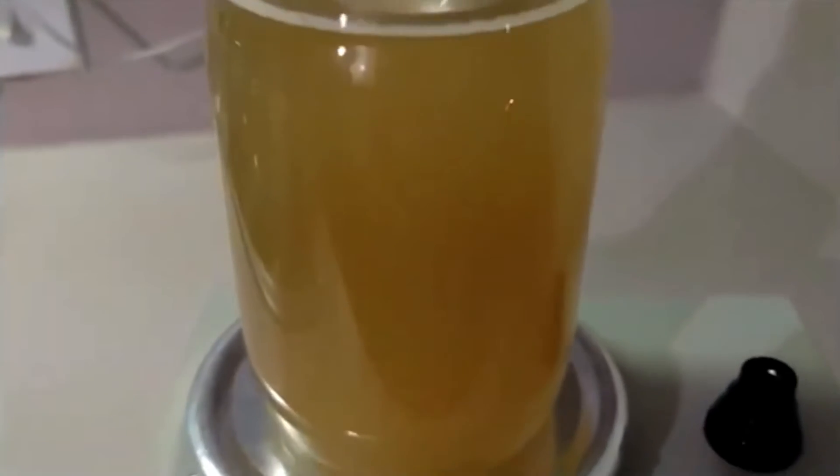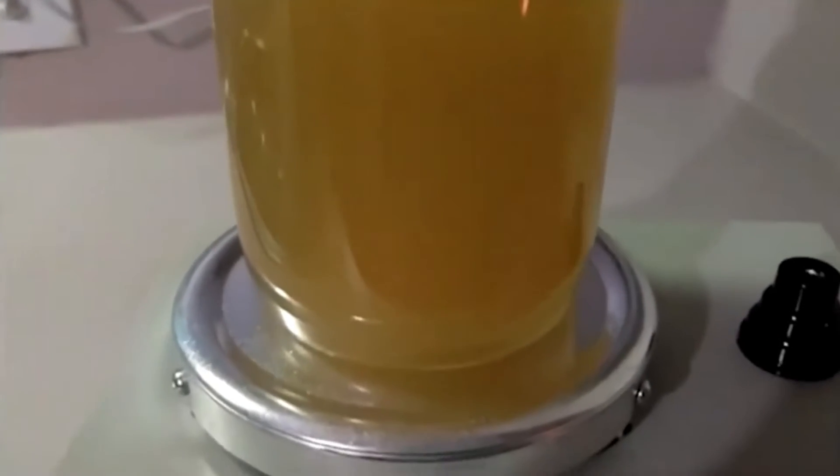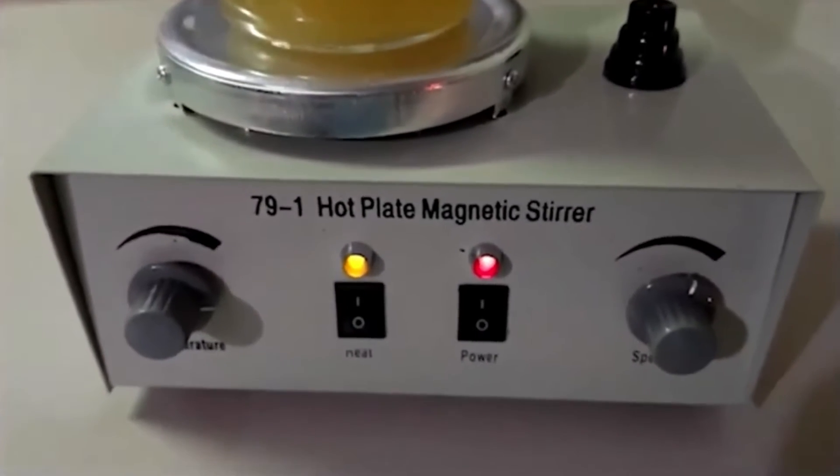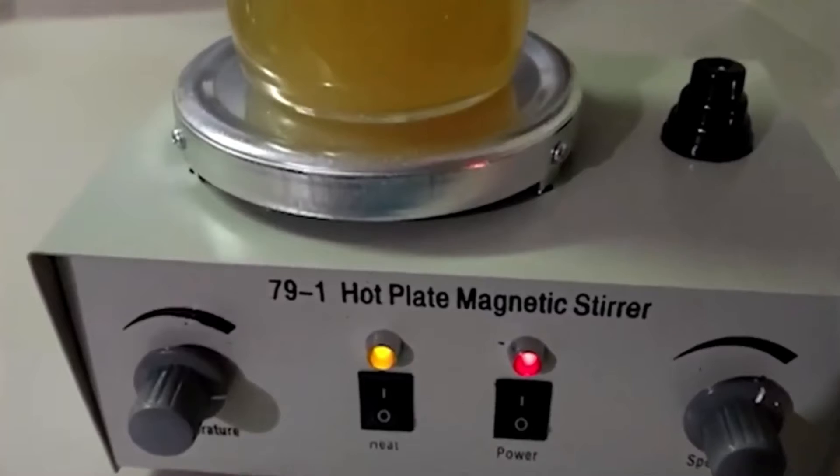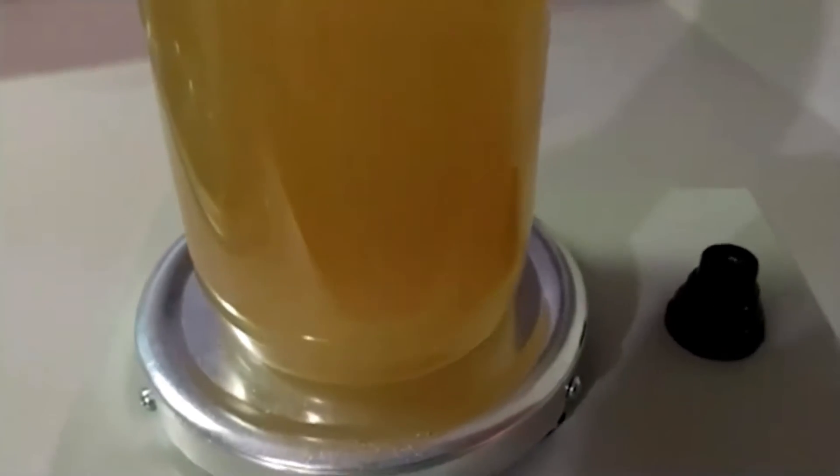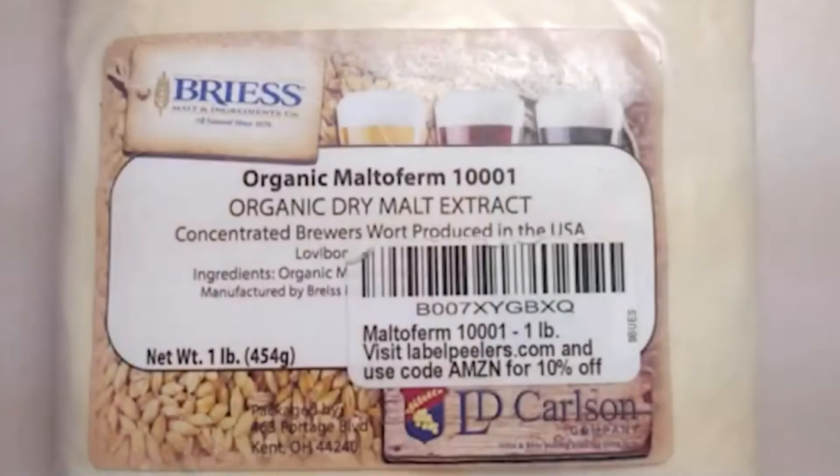We started with the standard 10 gram agar, 10 gram malt extract per 500 milliliters of purified water and definitely got quick tomentose growth, but it was hard to determine what was good mycelium and what was possible contamination.